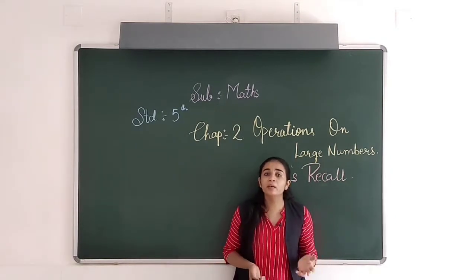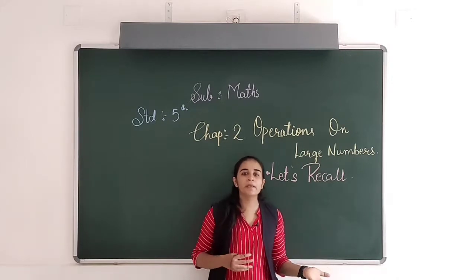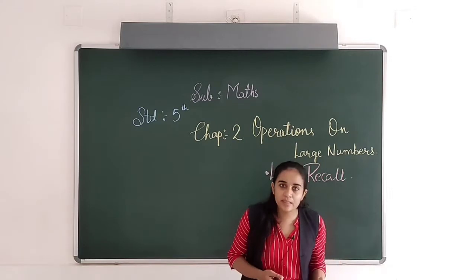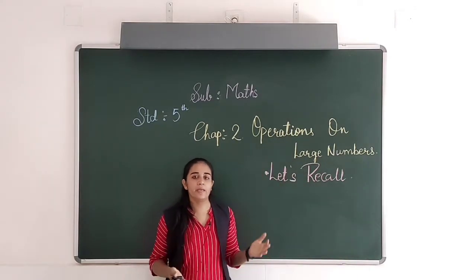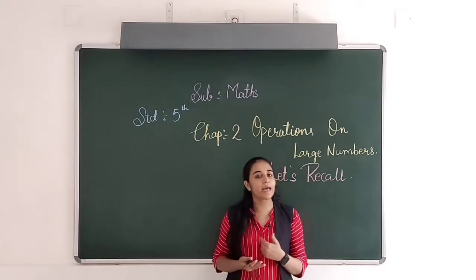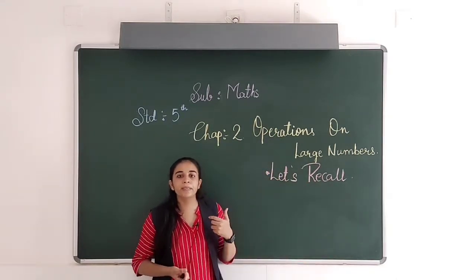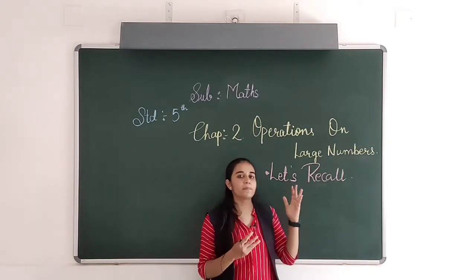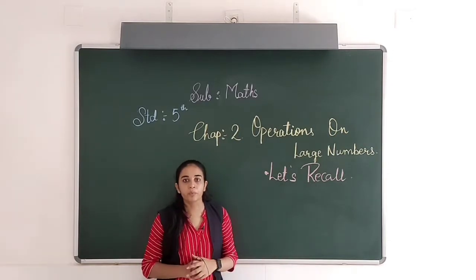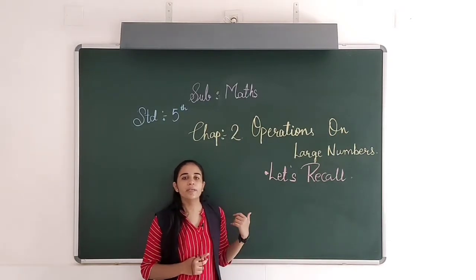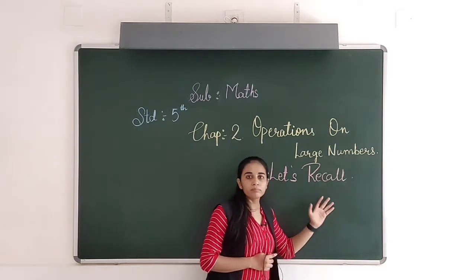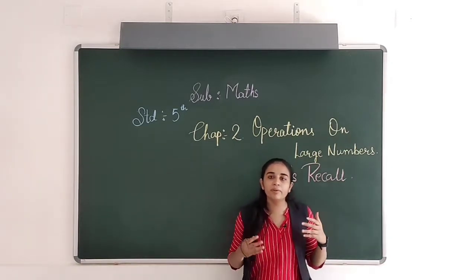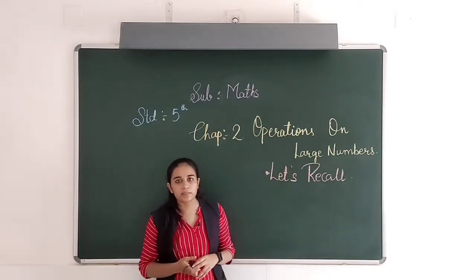Students, you have already learned addition, subtraction, multiplication, and division in your previous classes. But in this chapter, we are going to do the same operations — addition, subtraction, multiplication, and division — but with bigger numbers. Hum bade numbers ke saath addition, subtraction, division, and multiplication karengi. First we will do some revision with smaller digits, then we will start with bigger digits.